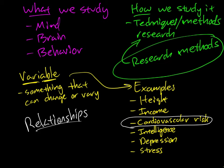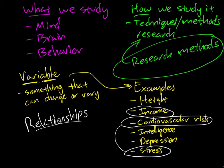For example, instead of just looking at cardiovascular risk by itself, I could also measure the level of stress that people are experiencing and see if there's a connection — if people have higher levels of stress, do they also have higher levels of cardiovascular risk? Another example: looking at income by itself isn't that interesting, and looking at height alone isn't very interesting either. But if I look for a relationship between the two, suddenly I have a very interesting study. Do people who are taller also tend to, on average, make more money?